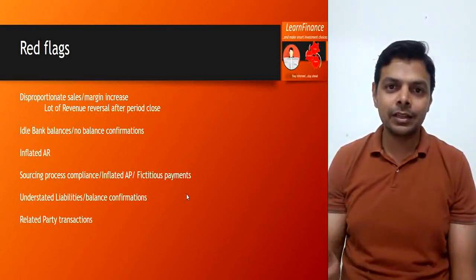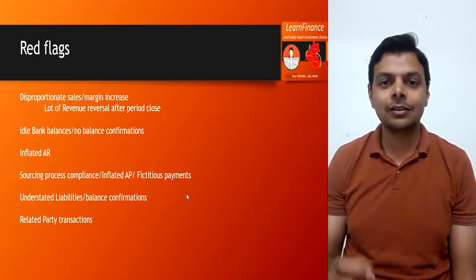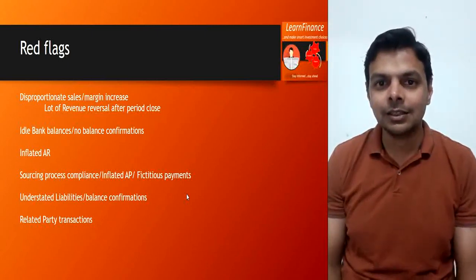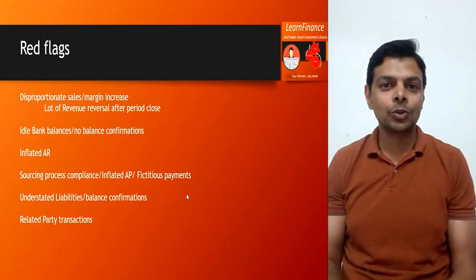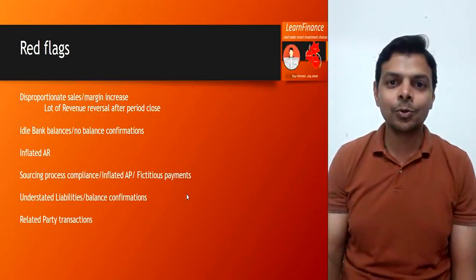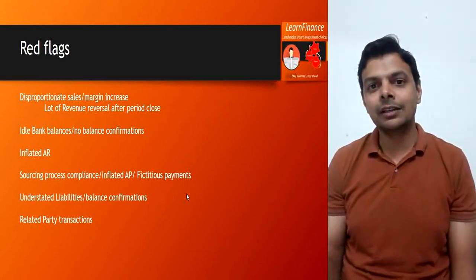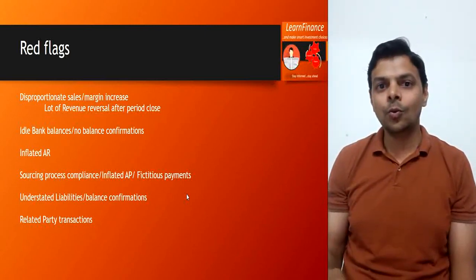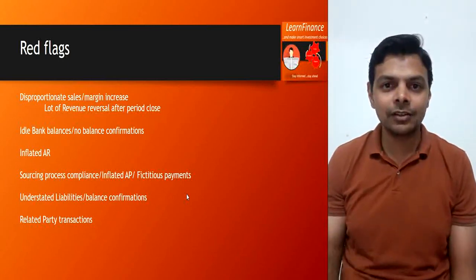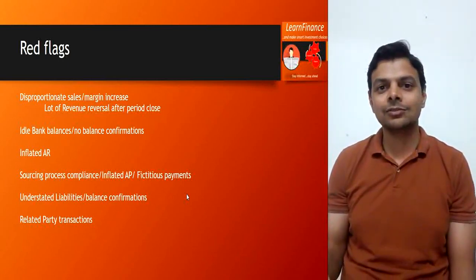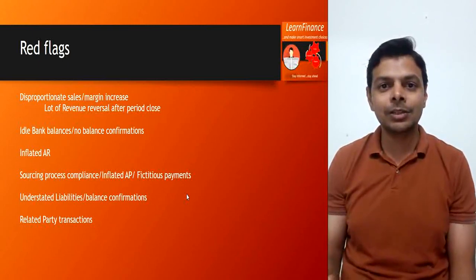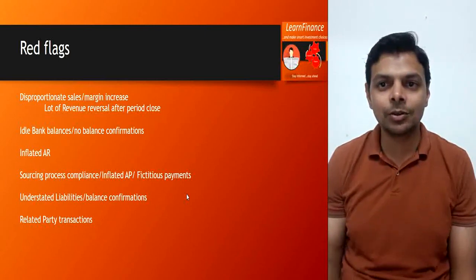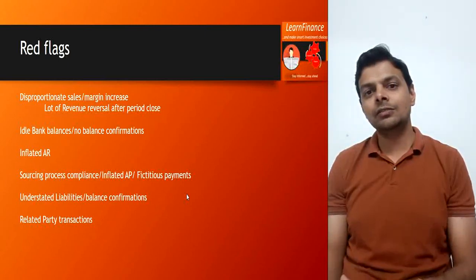Accounts receivable must be examined in detail and backed by third-party confirmations. In the sourcing process, there are two types of issues: under-reporting of liabilities — to show more profits and margins — or overstating liabilities, which can indicate money siphoning, where cash is going out of the company by illegal means, causing accounts payable and sourcing liabilities to be overstated.